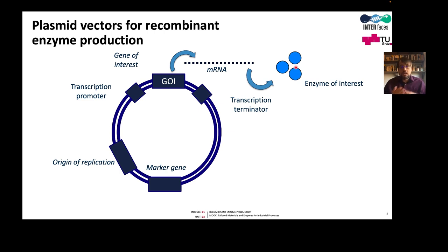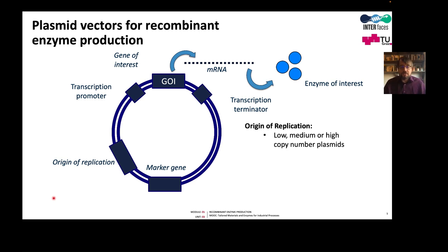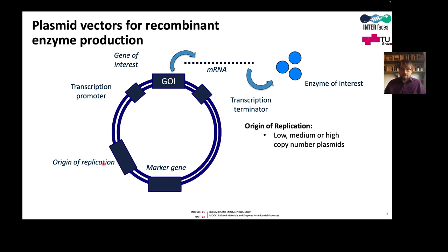High-copy plasmids are usually used when we want to use E. coli to produce a large amount of DNA for other purposes. There are different types of plasmids: low-copy number, medium-copy number, and high-copy number, and this is defined by the origin of replication.